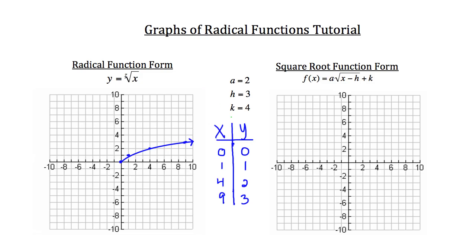Let's imagine these are our a, h, and k values. So a is equal to 2, h is equal to 3, and k is equal to 4. Remember, h and k are the x and y respective coordinates of the vertex of this function. I'm going to use 3, 4, 7, and 12 for my x values, and the y values will be derived from the formula.